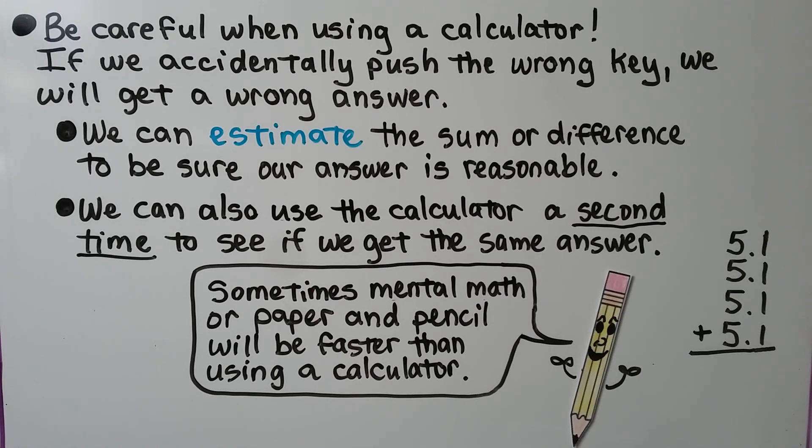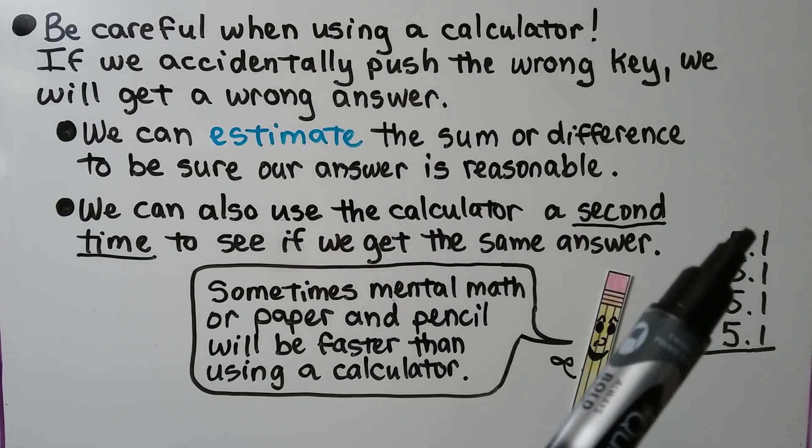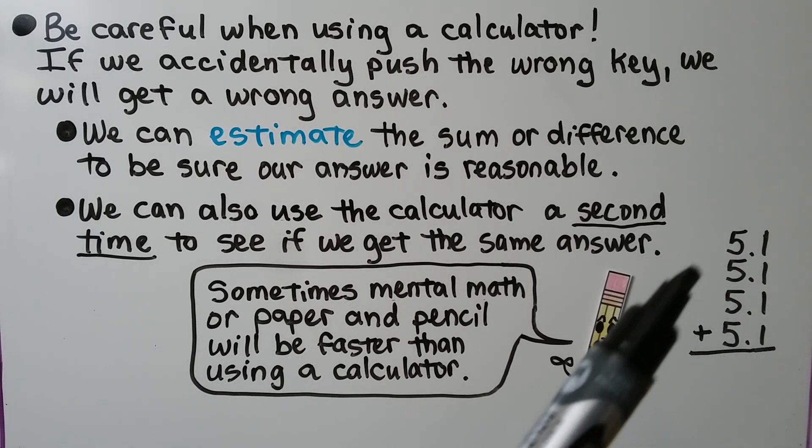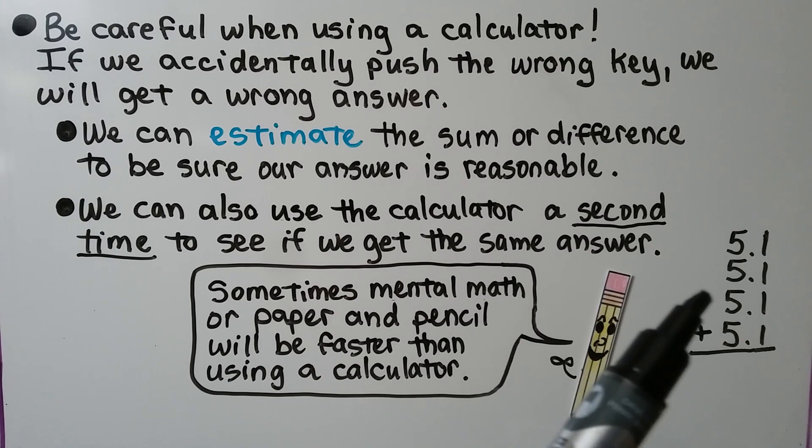But sometimes mental math or paper and pencil will be faster than using a calculator. Do you think it would be faster to find the sum here using mental math or using a calculator? We could very quickly say, well, that's 4 and skip count by 5s. 5, 10, 15, 20.